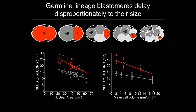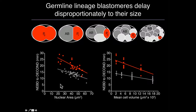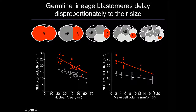We took cell size into account in two ways, focusing on the AB lineage in gray and the germline lineage in red. In our monopolar spindle assay, we measured nuclear area, which scales with cell size, allowing us to plot the correlation between delay and nuclear area. In a second set of experiments, we established mean cell volume for different blastomeres and plotted mean volume relative to variation in mitotic timing. In both cases, germline blastomeres appear to be delaying disproportionately to their size.